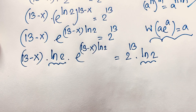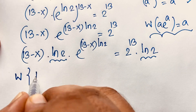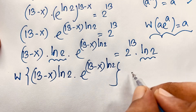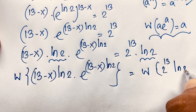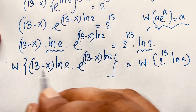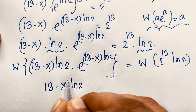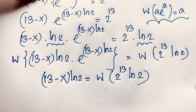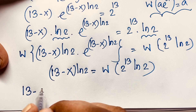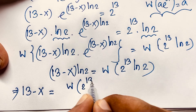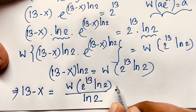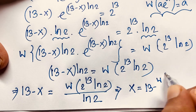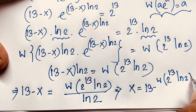I apply the Lambert W function formula here. So W applied to the left side gives: 13 minus x times ln 2 equals W of 2 to the power 13 times ln 2. Solving for x: 13 minus x equals W of 2 to the power 13 times ln 2, all over ln 2. Therefore, x equals 13 minus W(2 to the power 13 times ln 2) over ln 2.